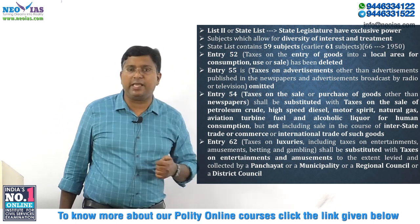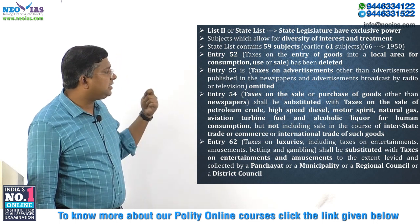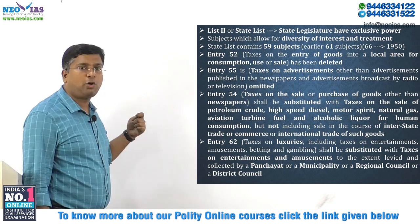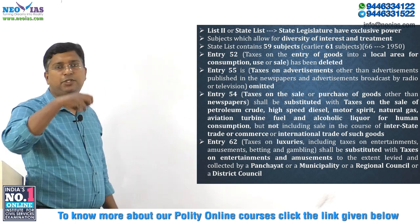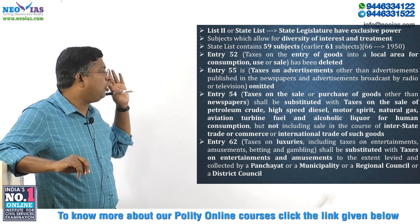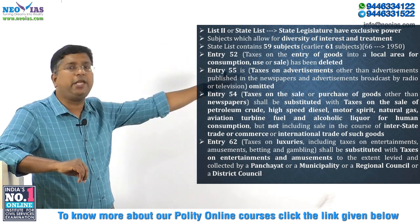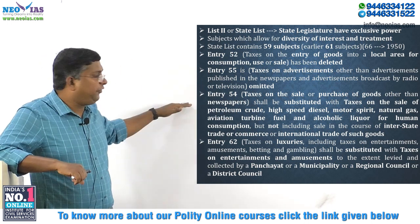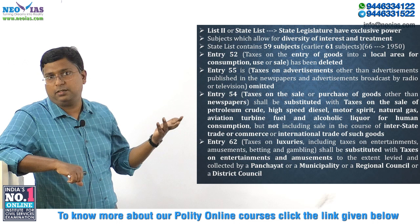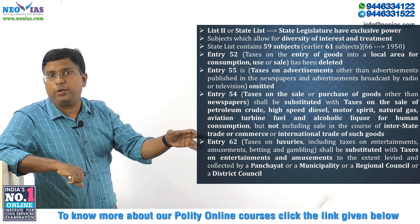Entry 54 has also been changed. Earlier it was on tax on sale or purchase of goods other than newspapers. Now it is basically talking about sales tax. Normally, sales tax has been subsumed under GST, but except for a few items, sales tax is still continuing — for example, there is still sales tax on petroleum crude, and excise duty on petroleum crude. Excise duty is with the union; sales tax is with the state under Entry 54.